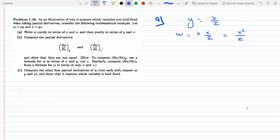Purely in terms of Y and Z, we have to eliminate X. So W is XY, and X is YZ, so Y times YZ is Y squared Z.